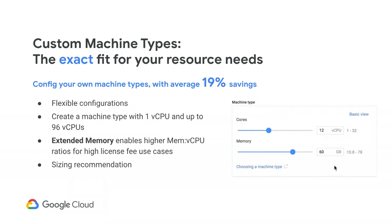Another great way that custom machine types help you is through extended memory, which is meant to break any barriers to creating the exact shape you're looking for. For example, with a workload that has very expensive per-core licensing requirements, you can figure out the amount of memory you need and then decrease the number of cores you're buying, so that you don't have to pay for extra licensing that you don't actually need.